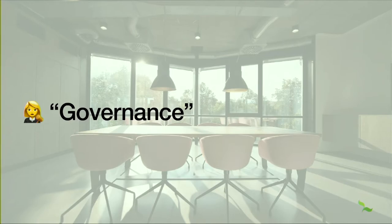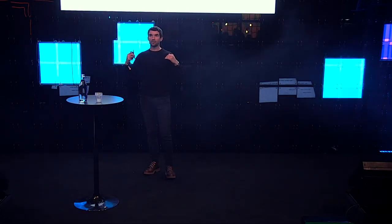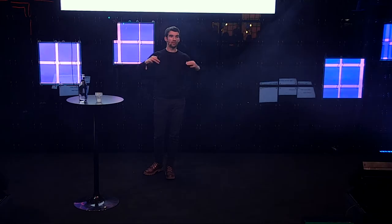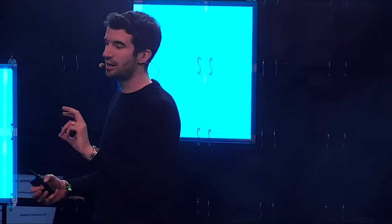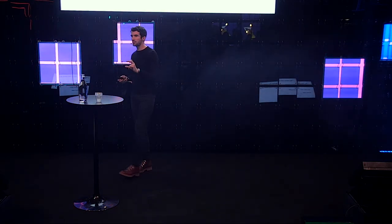The last area is governance. I'll quickly cover board composition, information rights, and consent rights. Information rights is a provision where your investors receive company information legally. It's incredibly important because for you to get the most out of your investors, you want to be as open with information as possible — I constantly talk to the next stage of investors for our companies, and if I'm super informed, I can be a better salesperson on behalf of the founders we back. Consent rights is the idea that certain decisions might be reserved — I'd keep that to stuff which doesn't inhibit you from running the company.